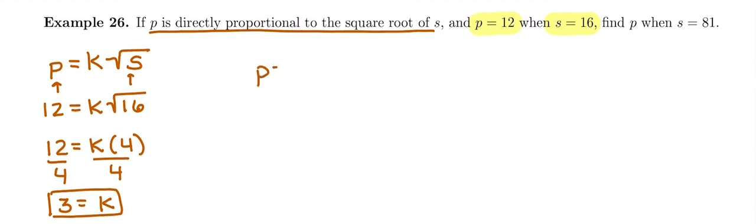So our equation is P equals 3 square root of S. This will tell us any value of P knowing each value of S. And we're asked to find P when S is 81.